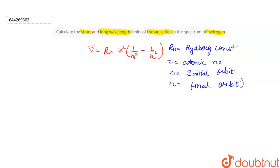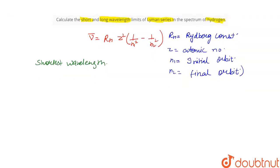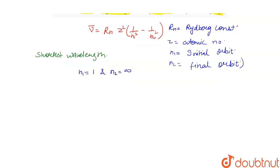Now let us consider Case 1: shortest wavelength. For the shortest wavelength, n1 is equal to 1 and n2 is equal to infinity, because the energy is the largest, so the wavelength will be shortest. We put the values n1 = 1 and n2 = ∞ into the equation.